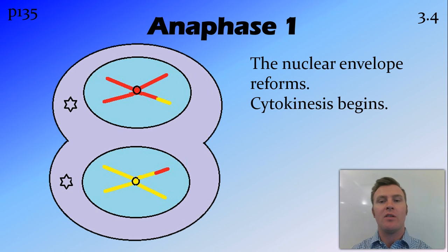Then in telophase 1, the nuclear envelope reforms and cytokinesis begins. Now, this is cytokinesis, being the actual cell division. Again, it's not technically a part of meiosis. Meiosis, we're talking about all the things that are happening with the nucleus and with the DNA. The cytokinesis does occur, but not technically part of the whole cycle.